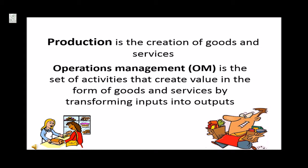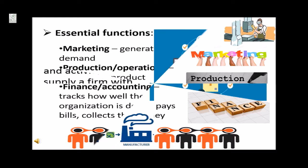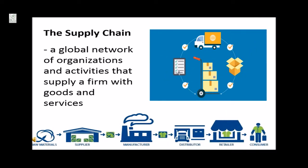Production is the creation of goods and services. Operations management is the set of activities that create value in the form of goods and services by transforming inputs into outputs. Essential functions: marketing generates demand while production and operations creates the product. And lastly, finance and accounting tracks how well the organization is doing, pays bills, and collects the money.